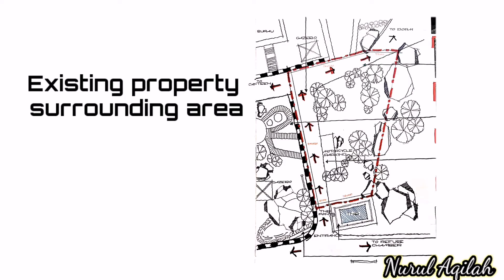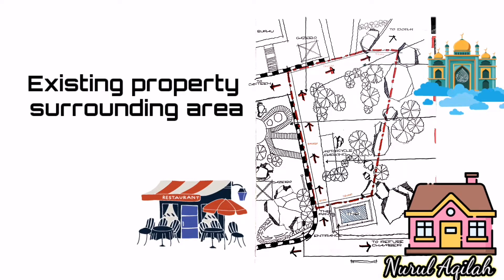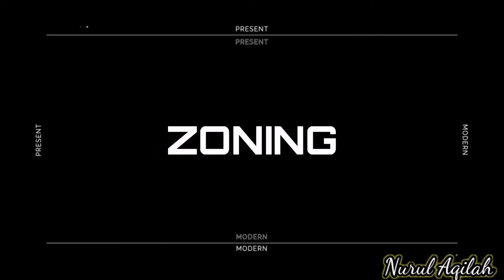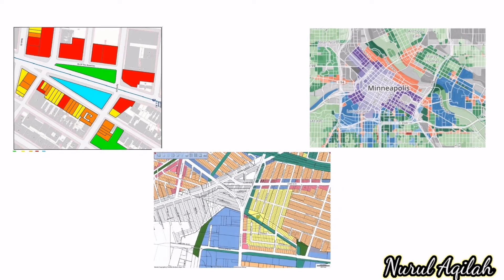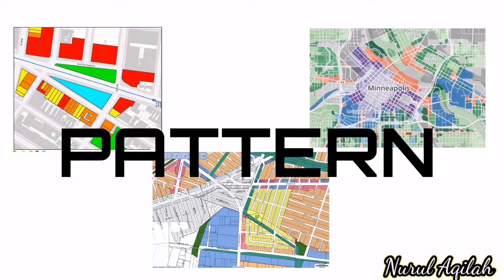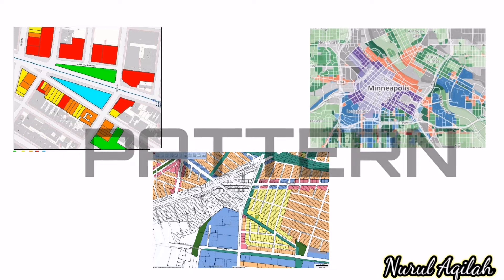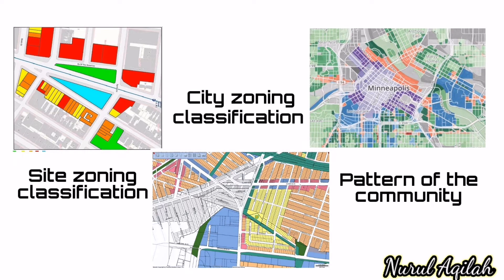When you have your base plan, you can start studying neighborhood context, where you acknowledge any existing properties and the surrounding area. After studying the surrounding neighborhood, you can identify site zoning specifications to understand the urban pattern of the community area. This identification will help you classify your design in terms of architecture style.